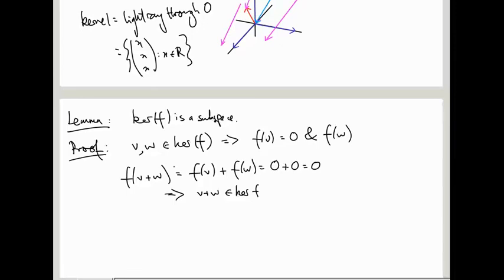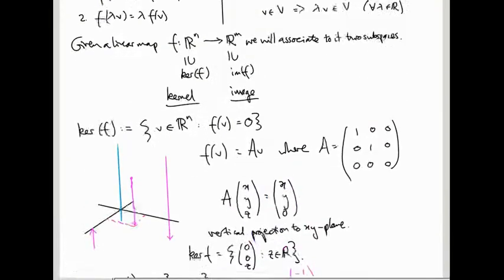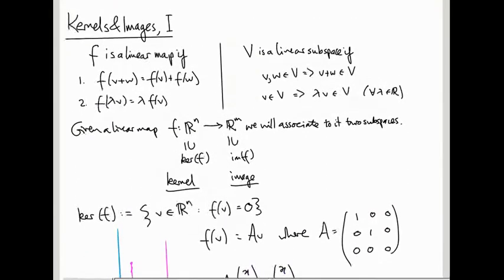Remember, being in the kernel means F of whatever you are is 0. So if V is in the kernel, then F of V is 0. If W is in the kernel, F of W equals 0. And that's not quite the end of the proof, because we also need to check that F of lambda V equals 0. But again, F is a linear map, so we can pull the lambda out. And now we get 0 because it's lambda times 0. So you see these two definitions that we started with, linearity of a map and being a linear subspace. They play completely analogous roles, right? You use both properties of linearity to prove the two properties of the kernel being a linear subspace.